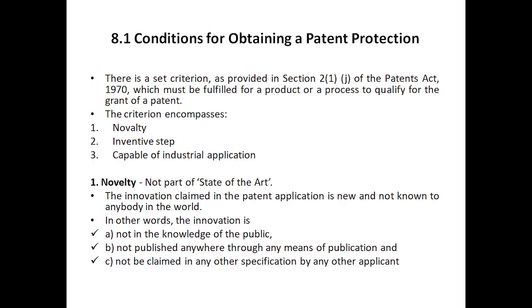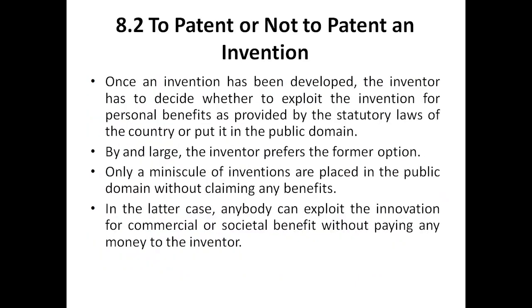So these are the three major conditions: novelty, inventive step, and capable of industrial application. These three things must be present with your intellectual property in order to get the patent. We will discuss 'to patent or not to patent an invention' in the next class.